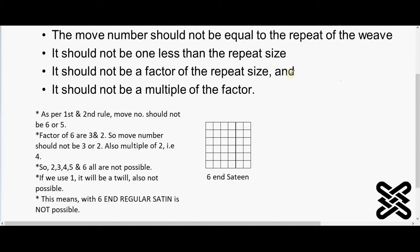So let's see the 6 and 13. Apply the first and second rule: the move number should not be equal to the repeat size, that means it should not be six, or one less than the repeat size, that means it should not be five. So move number should not be six or five.